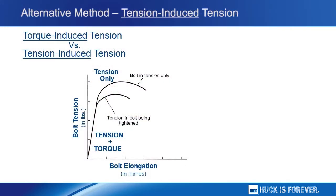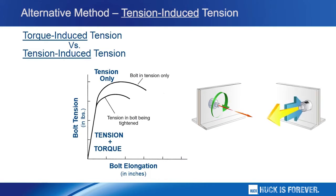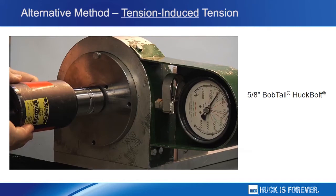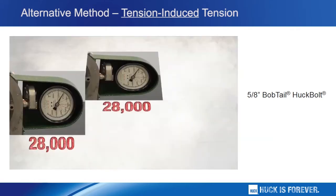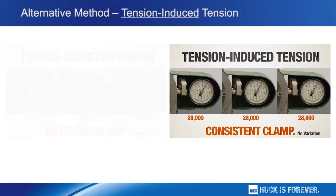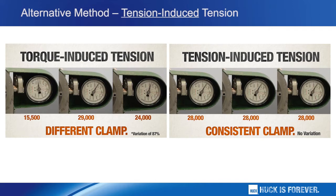To take this a step further, let's take an in-depth look at torque-induced tension versus tension-induced tension. Torque-induced tension results from the twisting of a bolt in the nut. Tension-induced tension, by contrast, results from the simultaneous pulling on the bolt and swaging on the collar. Using the same Skidmore-Wilhelm unit to test three 5/8-inch bobtail huck bolts, these three fasteners exhibited the same exact clamp — that's clamp consistency. Compare that with the widely varying clamp performance of torque-induced tension, a variation in excess of 87 percent, and torque-controlled bolts are no better.